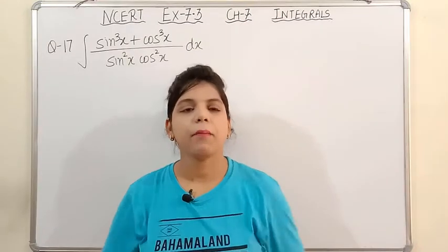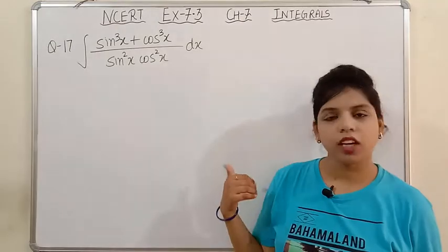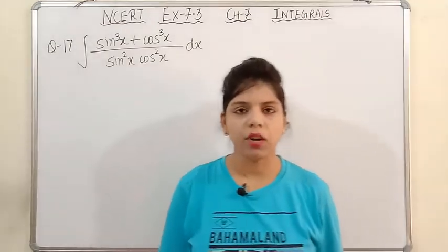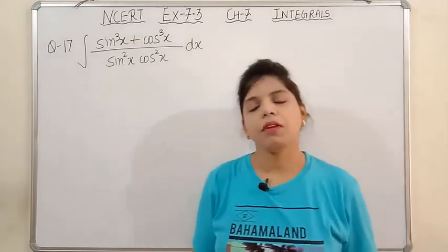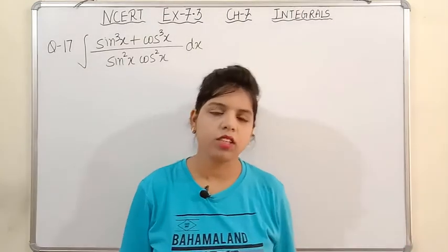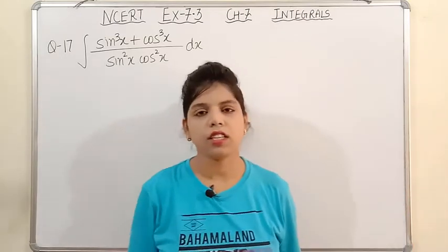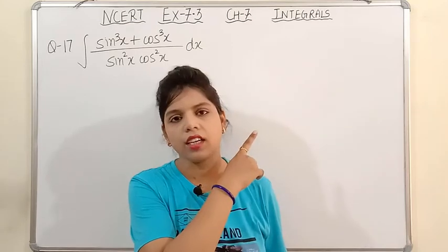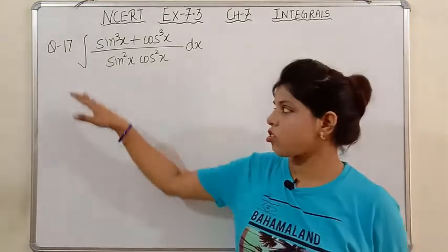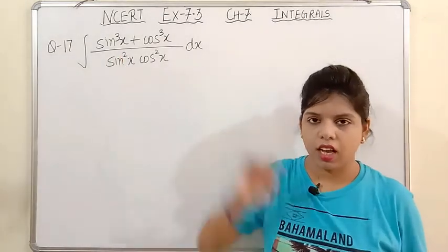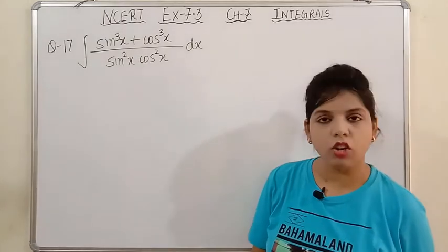Hello students, welcome back to our YouTube channel Alisha Math Classes. Today I am going to start Chapter 7, Exercise 7.3 from question number 17. In our previous video I have discussed from question number 9 to 16. Students who have any problem with the previous questions can click the i-link in the description to see those solutions. So moving on to question number 17, that is integration of sin³x + cos³x upon sin²x · cos²x.